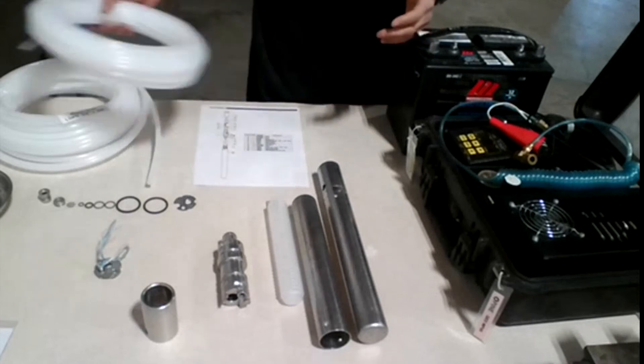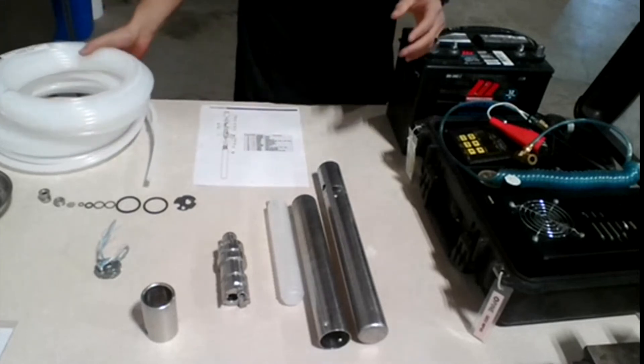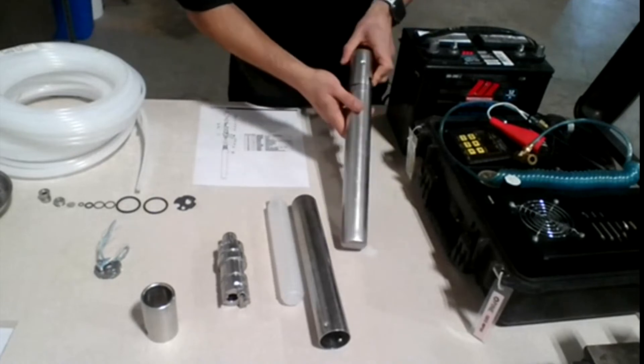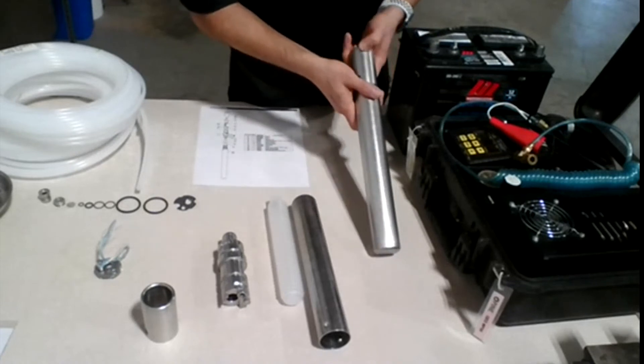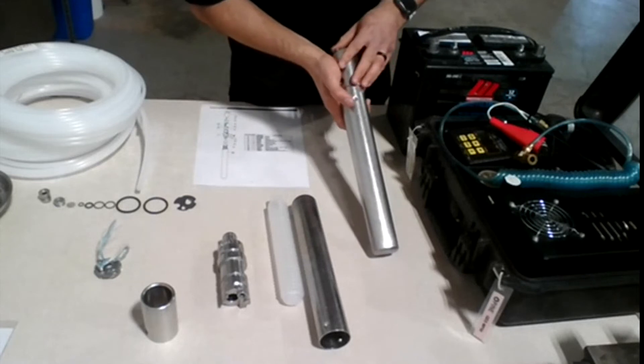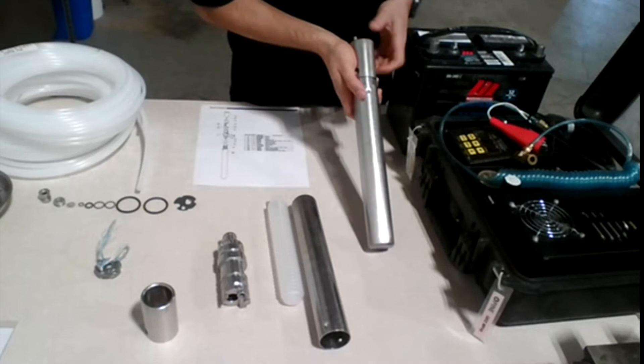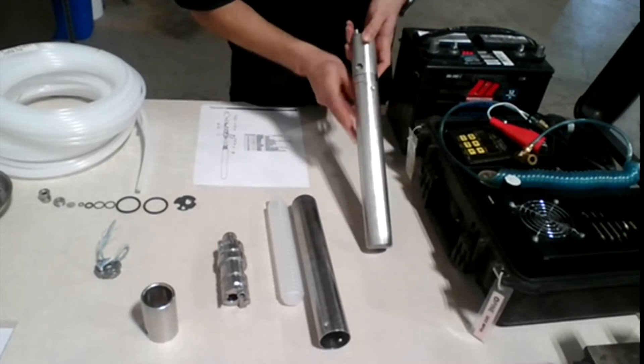So now we get to the point where, how does the bladder work, right? So, as I said before, the idea of the bladder pump is to bring groundwater sampling all the way to the surface, right? So we're using the compressor to inject gas or in this case, just air into the bladder pump.